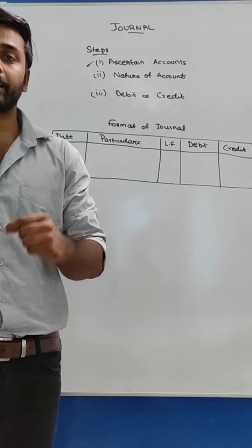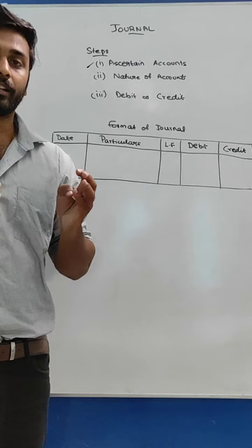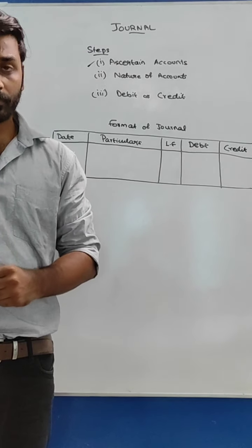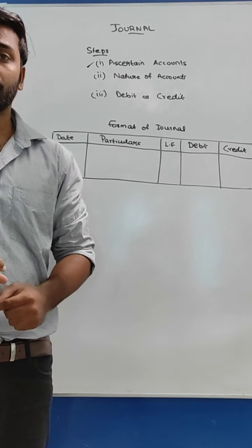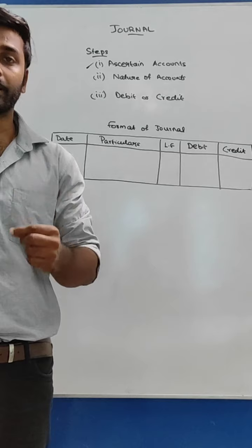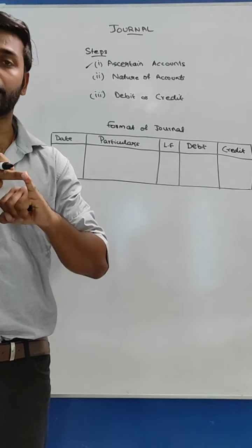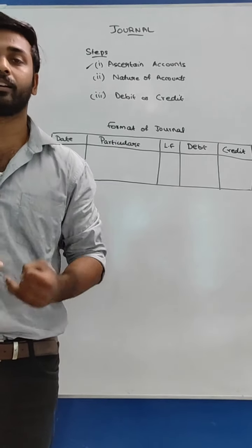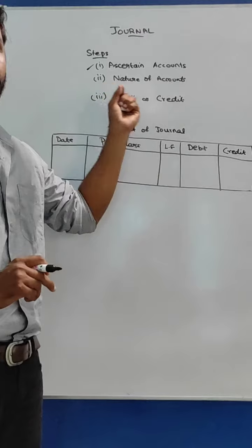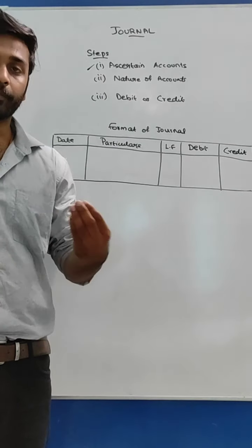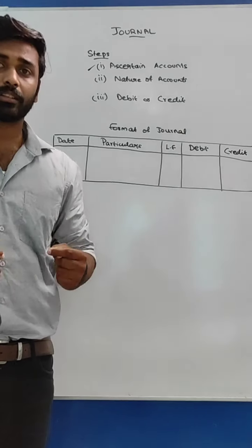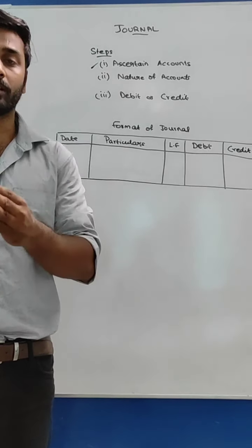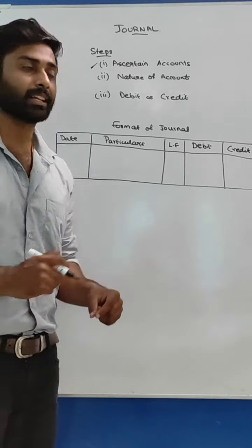The second step is to identify the nature of these accounts. For identification we can use two approaches: the modern approach or the traditional approach. Under the modern approach, capital is a classification of its own, and cash is an asset of the business. Under the traditional approach, cash is a real account and capital is a personal account, since capital represents the owner's amount.